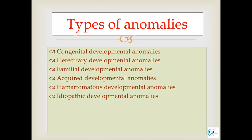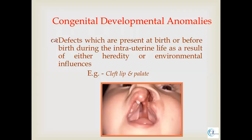Starting with the types of anomaly, we will discuss them one by one. First is the congenital anomaly, second is hereditary, familial, acquired, hamartomatous, and idiopathic. Regarding congenital developmental anomaly, it is a defect present at or before birth. It is due to disturbance during intrauterine life, which could be either hereditary or environmental — such as cleft lip and palate.